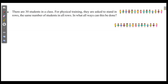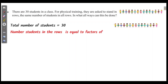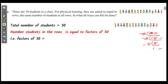For physical training, 30 students are arranged in rows with the same number of students in all the rows. The total number of students is equal to 30. The number of students in each row is equal to the factors of 30. We divide: 2 gives 15, 3 gives 5, then 5 and 1.